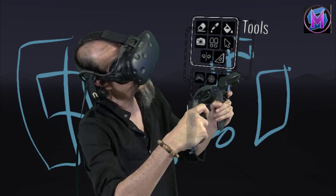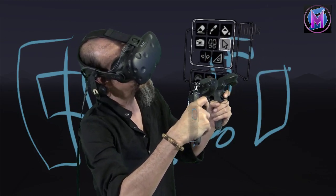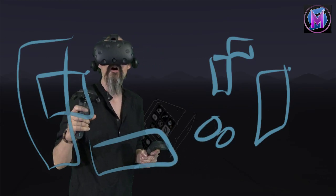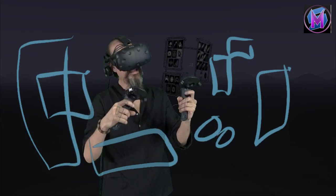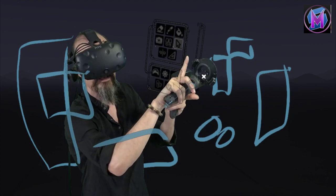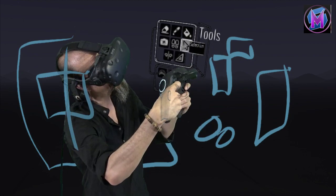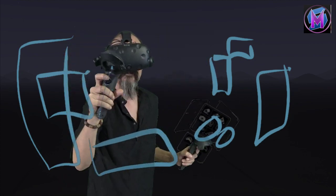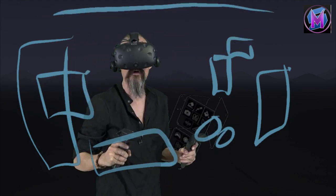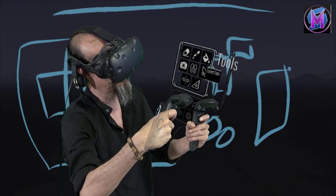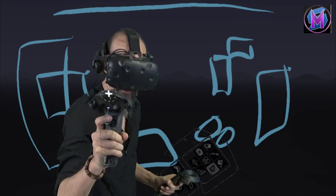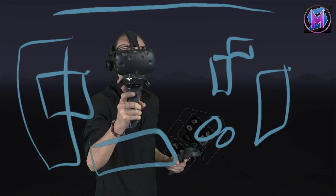I'm going to go ahead and choose the Selection Tool. The Selection Tool is what we call a toggle. Clicking it once turns it on, clicking it again turns it back off again, and we're back to whatever brush we were using before. When I activate it, it does remember what we had, so when we turn it off, we go back to the previous.